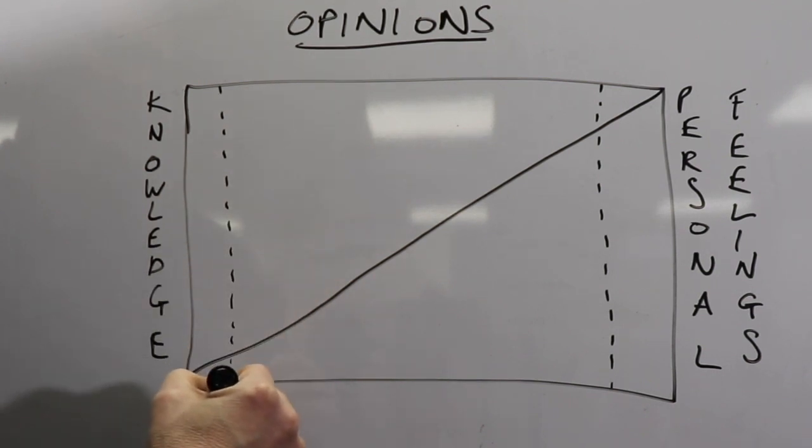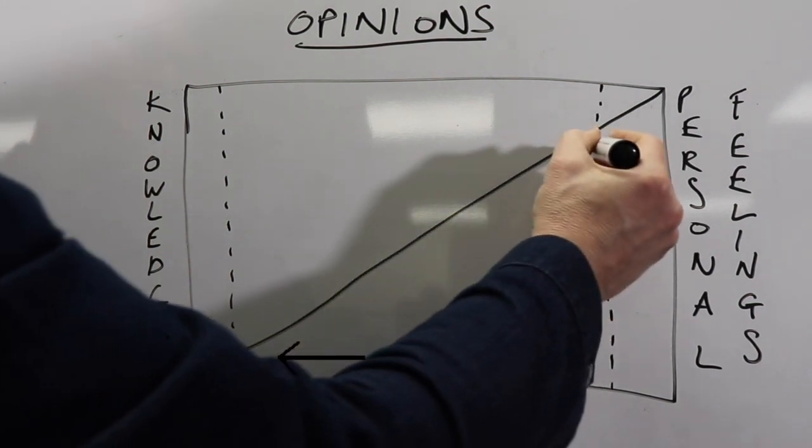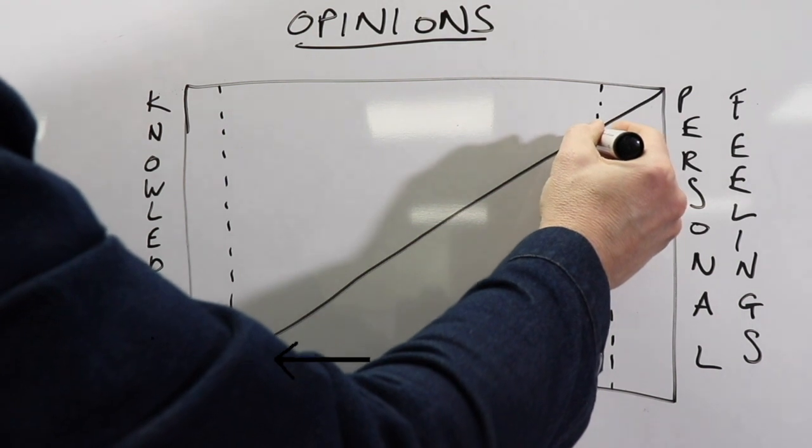On the other side here this is an opinion based mostly on knowledge. You see from the top of the rectangle to the diagonal line is knowledge, and from the diagonal line to the bottom of the rectangle that's personal feelings.